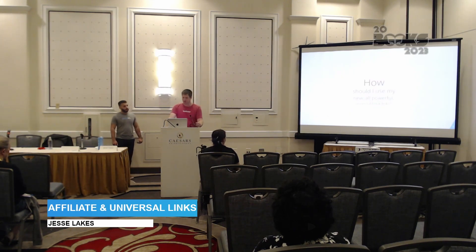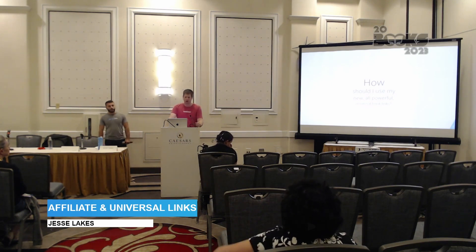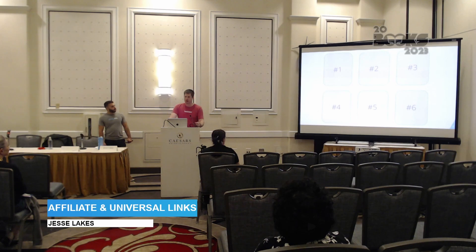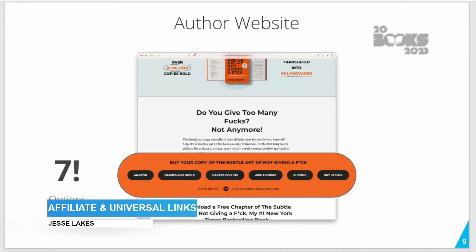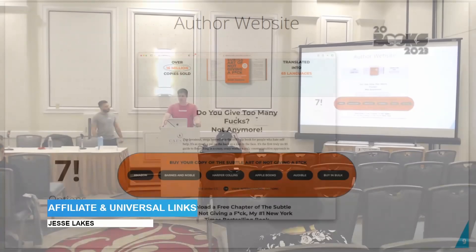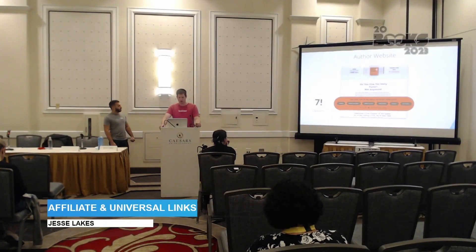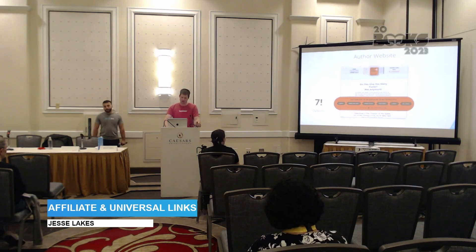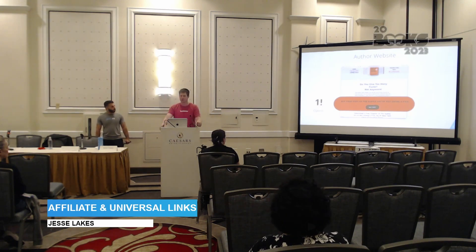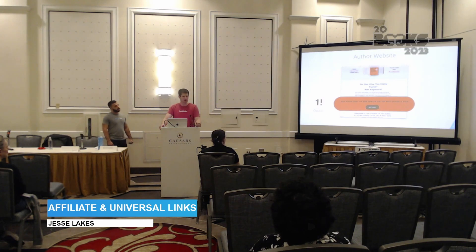We talked about why you should use a universal book link. Now let's talk about where you might want to use them — and we have six good places. The first is your author website. Mark Manson's website for The Art of Not Giving a F*ck is professional, but my complaint is it violates the one page, one goal principle — seven different ways to buy the book probably lowers conversion rate compared to a single link. Getting people to move through micro conversions down the funnel helps them actually finish the journey. One button to buy and then one landing page with options gives a much better flow and higher conversion rate.